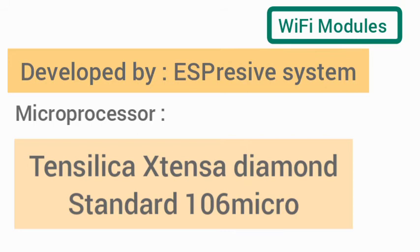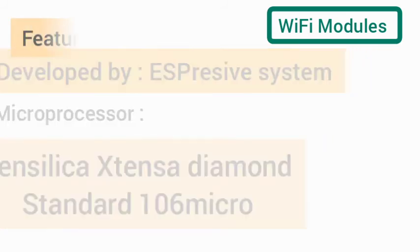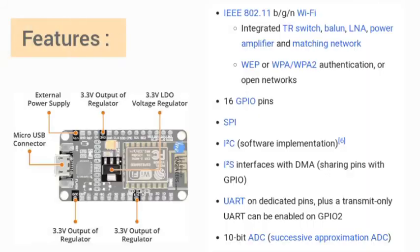Now let's see the features of this module. The frequency of this module is 80 to 160 megahertz. It has 16 GPIO pins, a 10-bit analog-to-digital converter, and it also supports the IEEE 802.11 protocol for Wi-Fi.